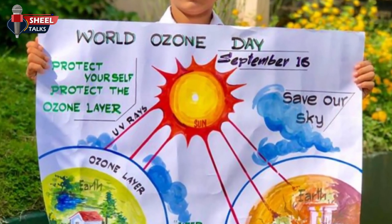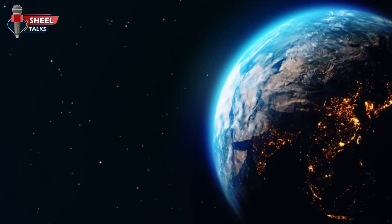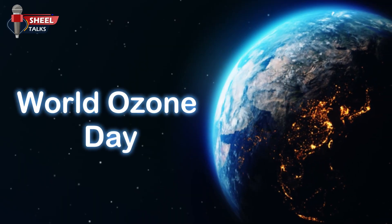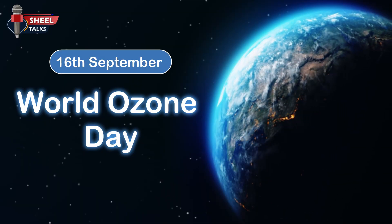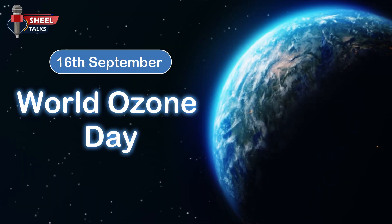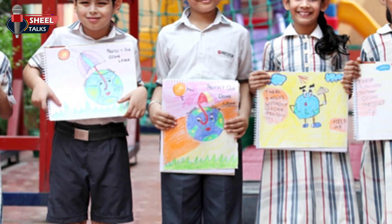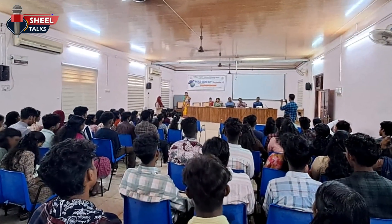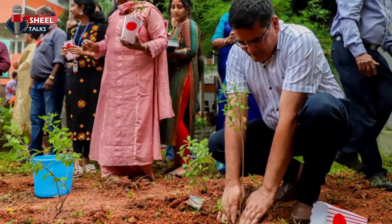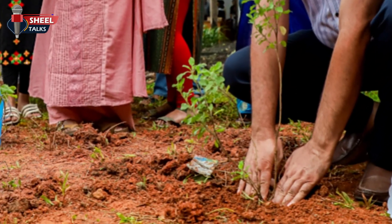That is why, with the purpose of raising awareness about the ozone layer, World Ozone Day is observed across the globe on the 16th of September every year. On this day, awareness is spread among children as well as adults through various activities and programs, so that people avoid actions or the use of chemicals that can harm the ozone layer.